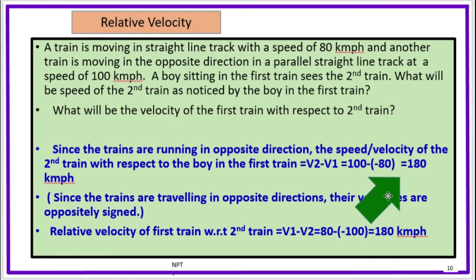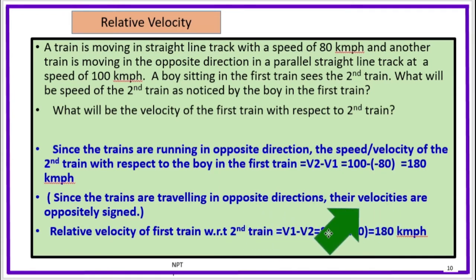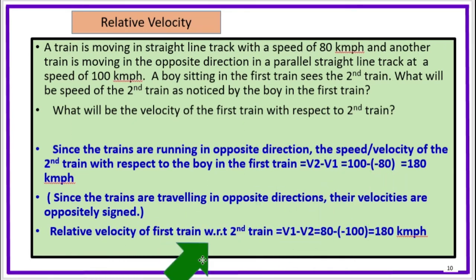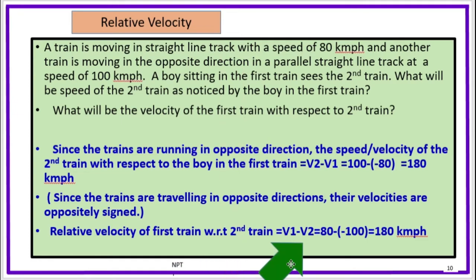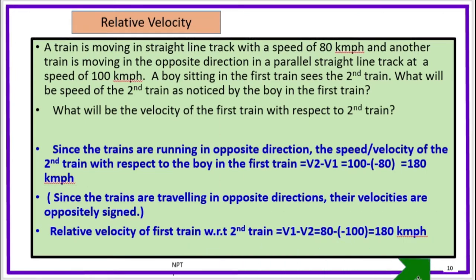Since the trains are travelling in opposite directions, their velocities are oppositely signed. That is why their difference becomes a very high positive value. The relative velocity of the first train with respect to the second train is equal to V1 minus V2, equal to 80 minus minus 100, equal to 180 km per hour.